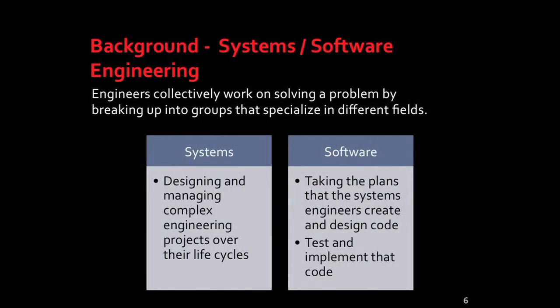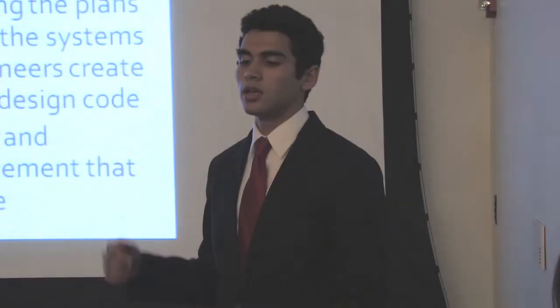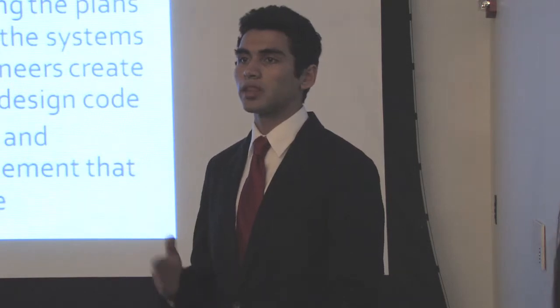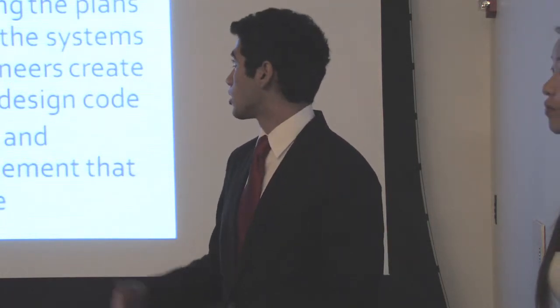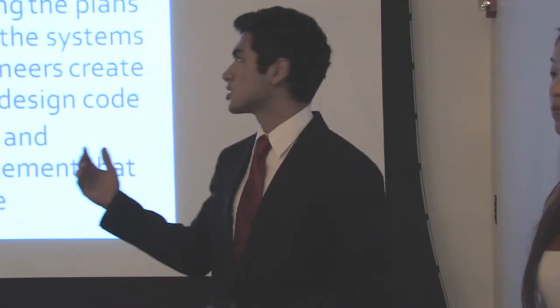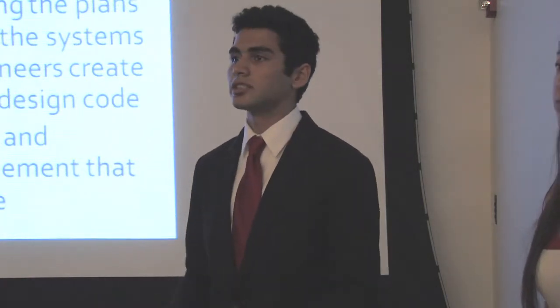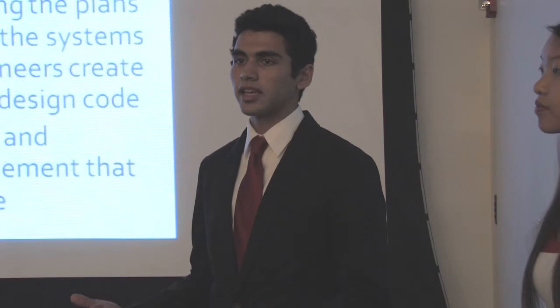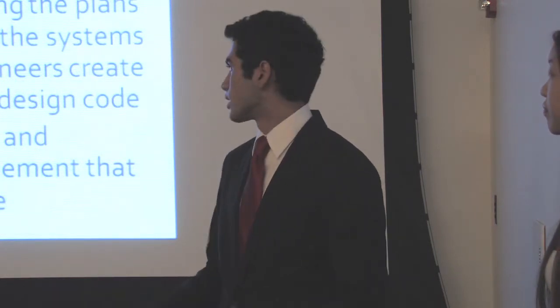In working with problems such as the traveling salesman problem, two different types of engineers are usually involved. The first type is systems and the second is software. Systems engineers primarily focus on setting the goals of the app and what it will cover. Software engineers are responsible for taking all the planning that systems engineers come up with and turning it into a tangible product, which means testing and implementing code.